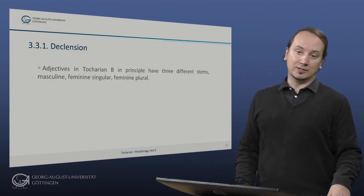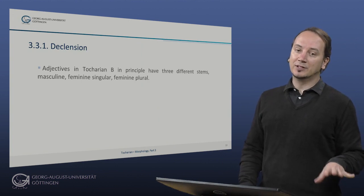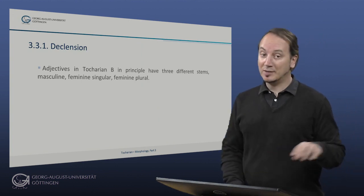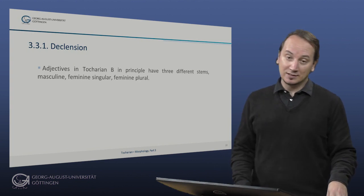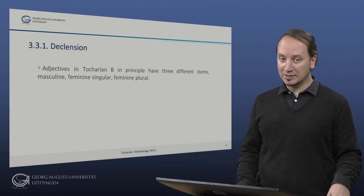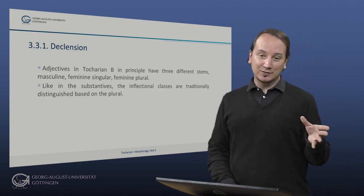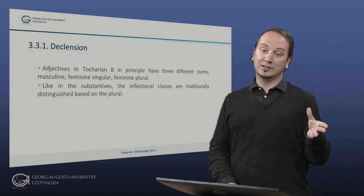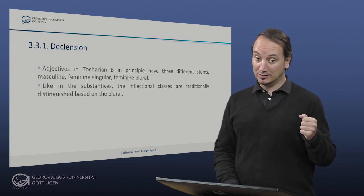Now let's turn to adjectives. Adjectives in Tocharian B in principle have three different stems: masculine, feminine singular, and feminine plural. So they're all distinct, and like in the substantive, the inflectional classes are traditionally distinguished based on the plural.